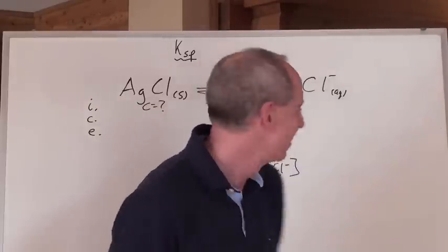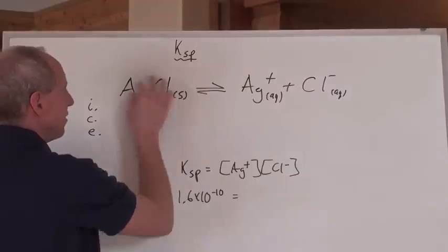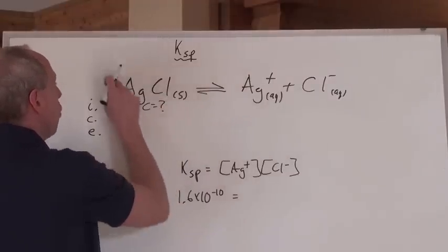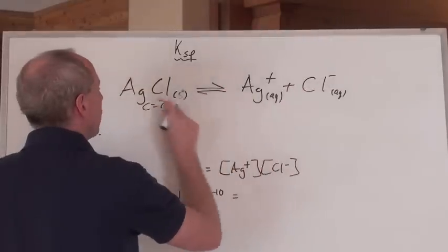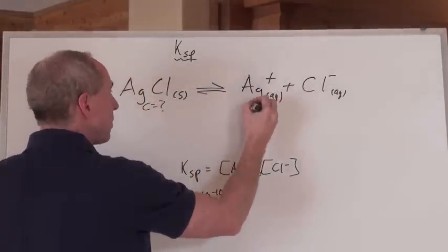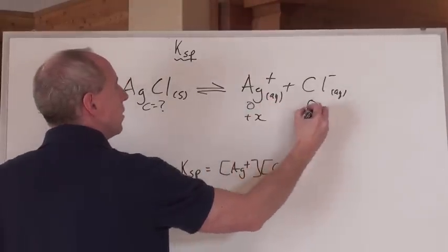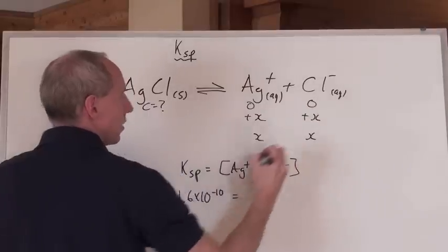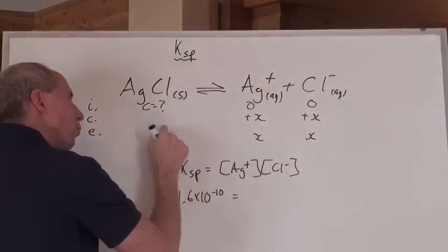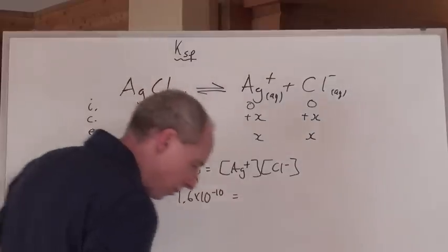So how do you do that? Here's the thing. I don't care about this because it's a solid, but here's what I do know. One of these makes one of these and one of these, so if this is going to lose from itself, it's going to lose X to form. Initially, you have nothing here, but you're going to gain X here and gain X here to form X here and X here. I don't care about this solid, so I'm not going to worry about it.